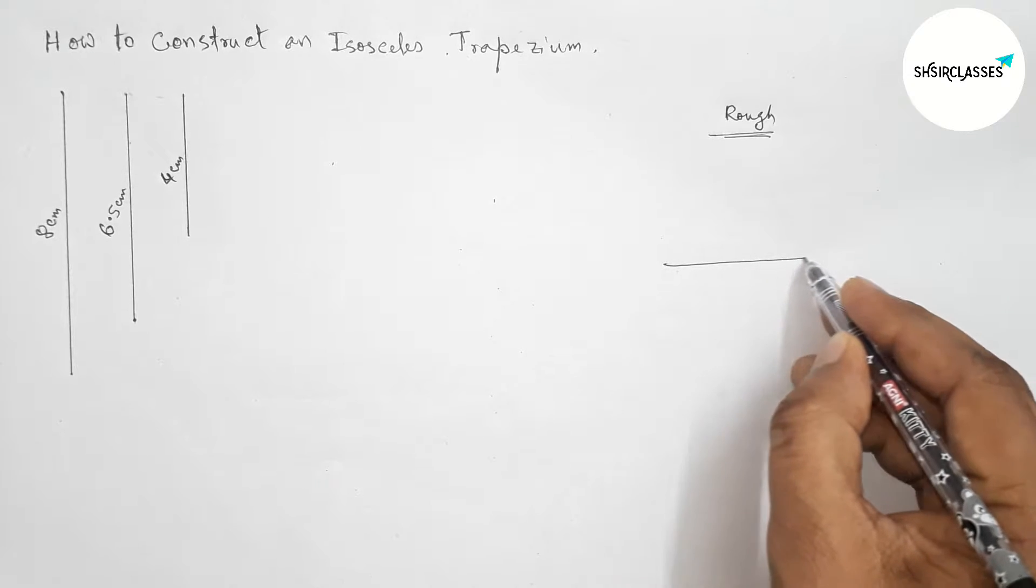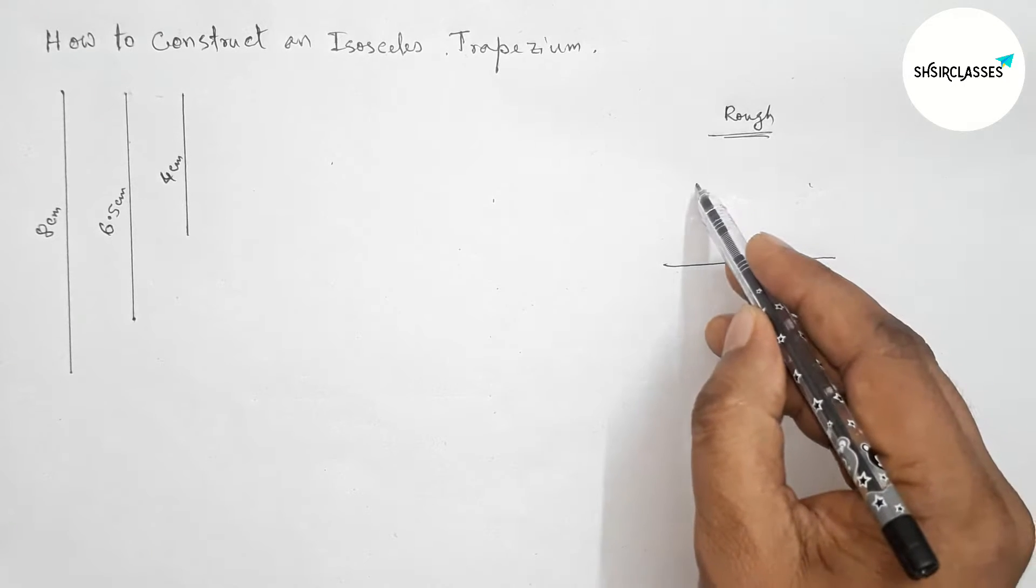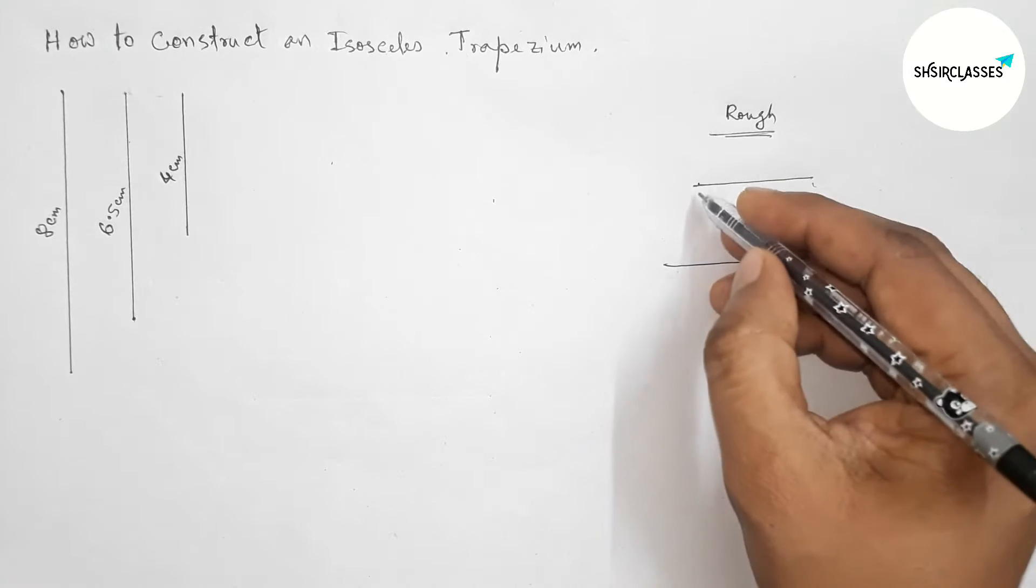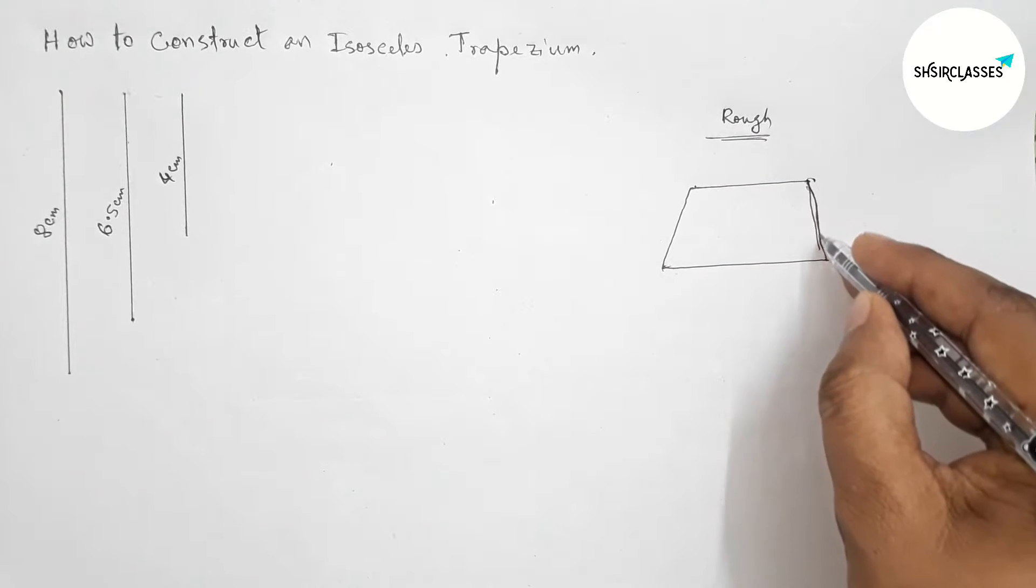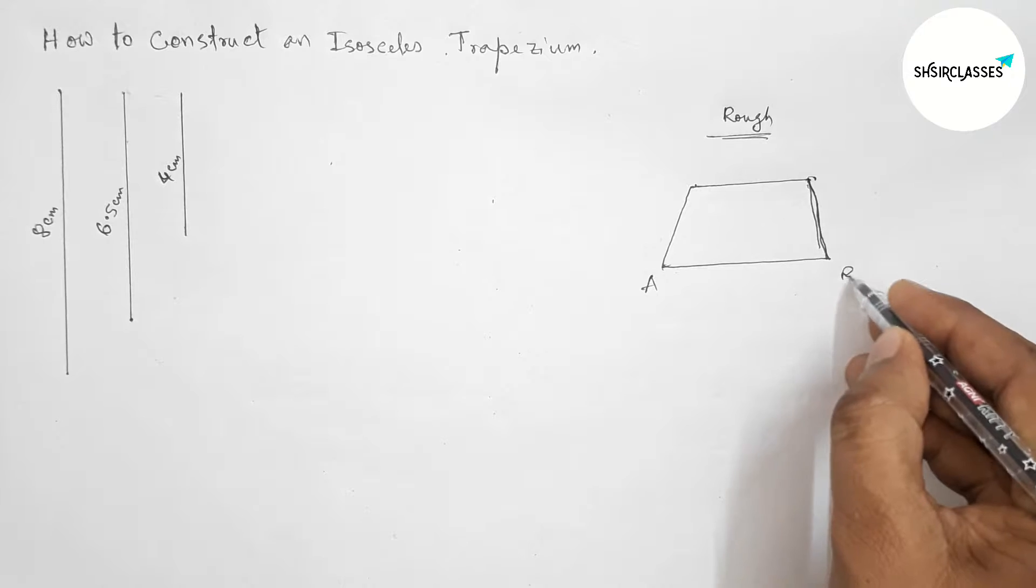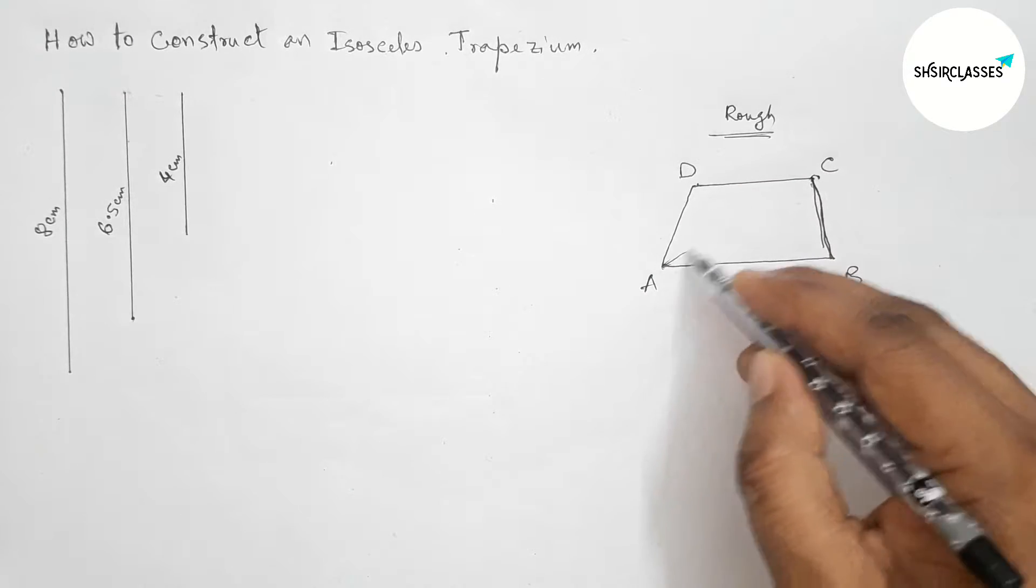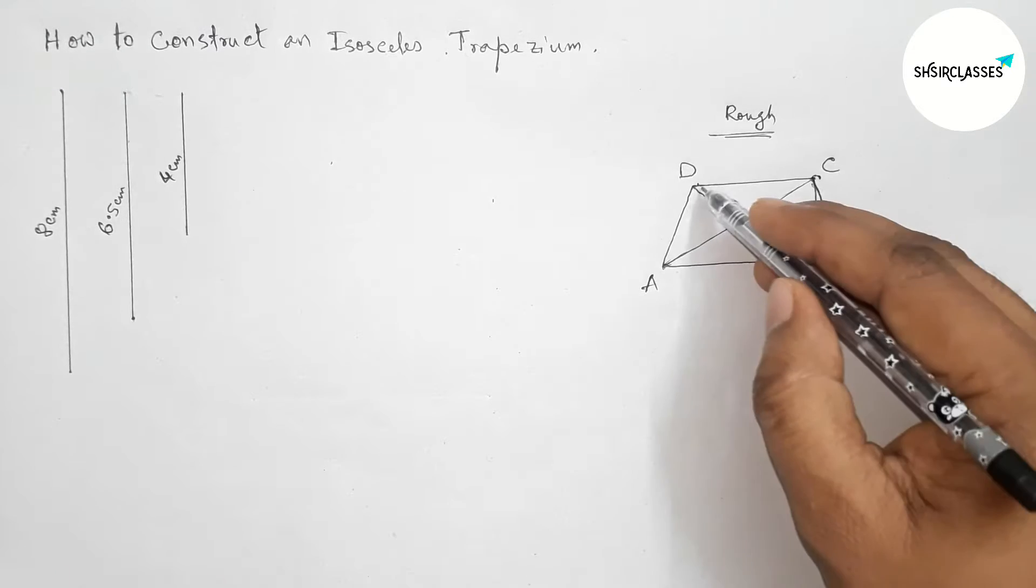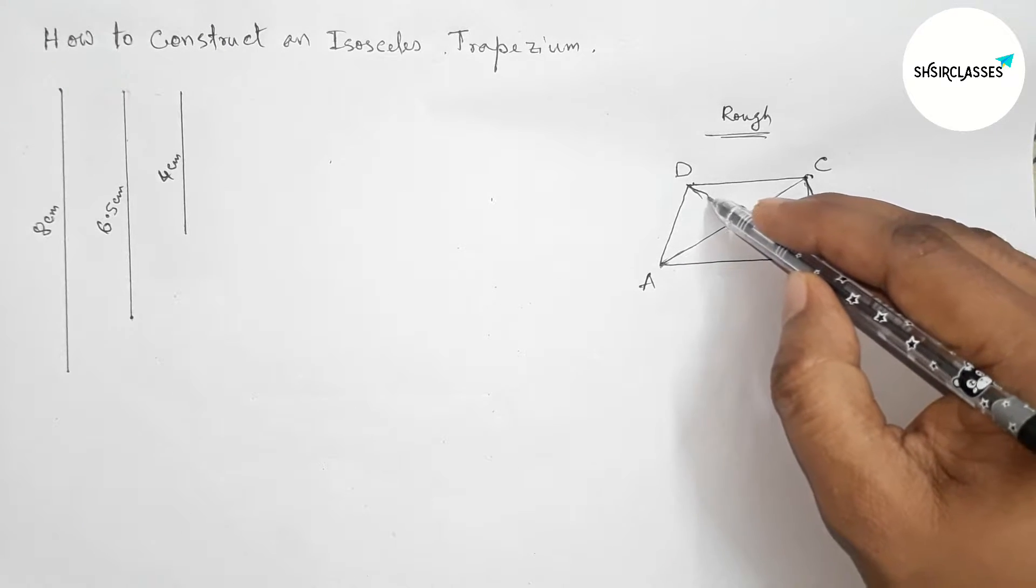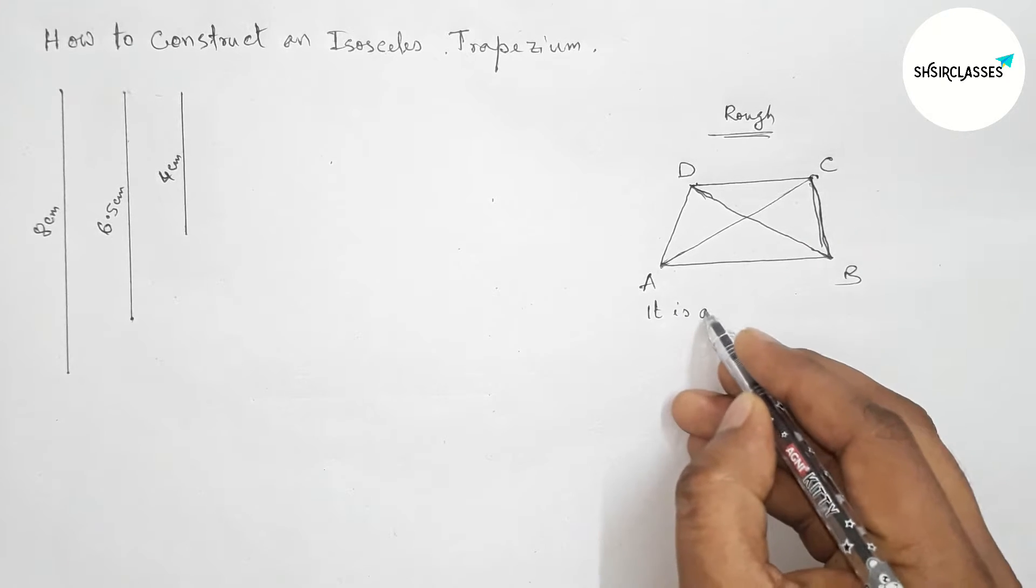So here now I am going to draw an isosceles trapezium roughly by this way first and discussing about an isosceles trapezium. So this is an isosceles trapezium ABCD. Next, drawing both the diagonals AC and BD.